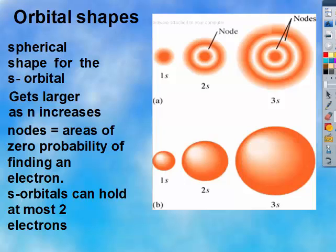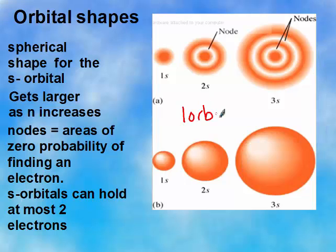Nodes, as you can see from the picture, are areas of zero probability of finding an electron. Remember that an S orbital can hold at most two electrons. S orbitals can hold at most two electrons, which means there must only be one orbital for S.